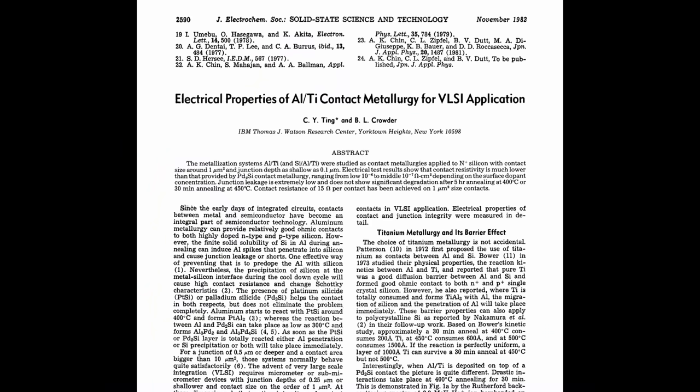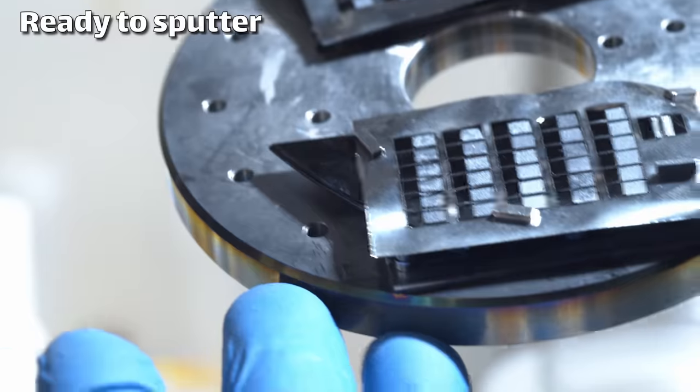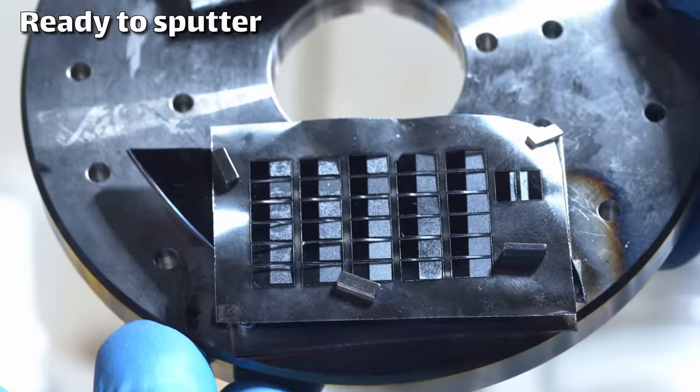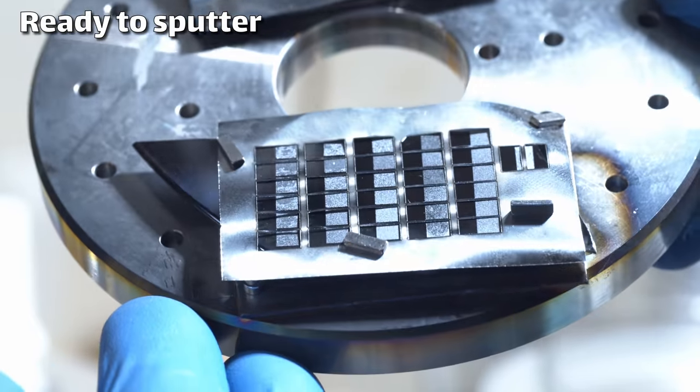It can form ohmic contacts with n-type but it has to be a highly doped n-type and I'm not sure my doping concentrations, so I didn't really want to risk it. From my reading, there's a paper from 1982 that says that a titanium layer will form a good ohmic contact with the silicon and kind of start to form silicides, and then the aluminum can interface with the titanium and that's how you can form a good contact.